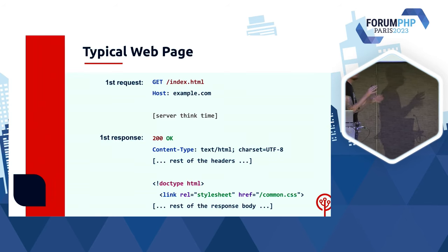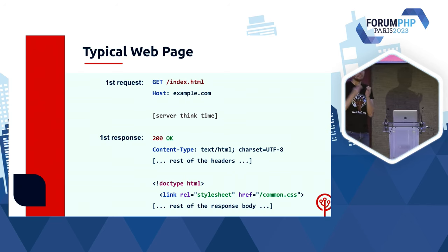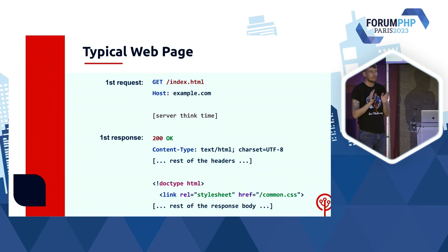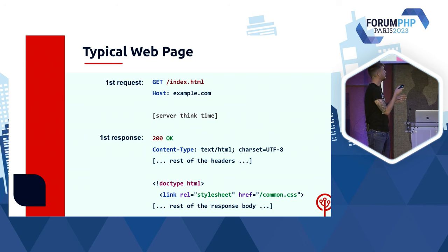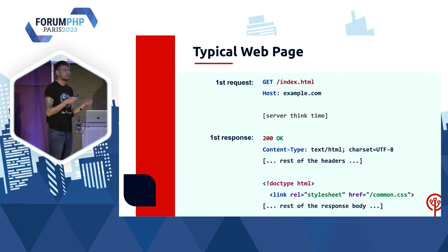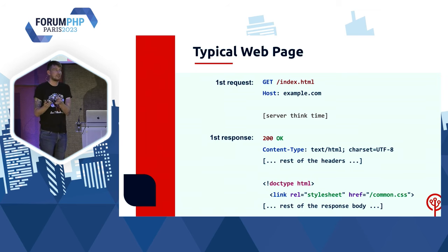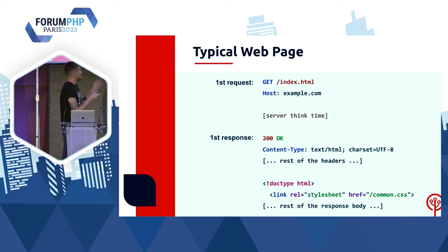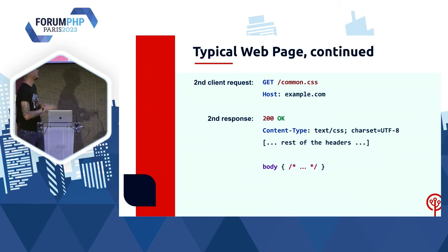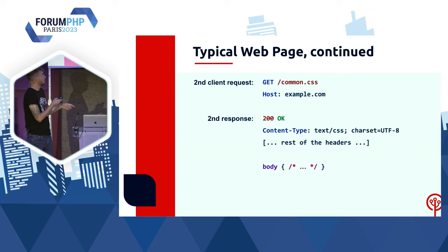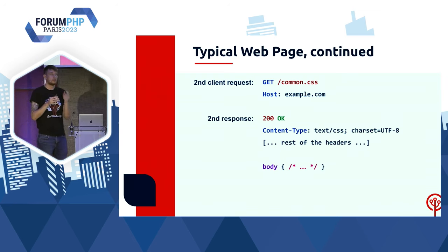Au niveau protocole, comment ça marche ? C'est du HTTP abstrait, c'est-à-dire que c'est ni du HTTP 1, ni du HTTP 2, ni du HTTP 3. C'est un truc qui marche à peu près dans les trois. Ça ressemble très fort à du HTTP 1. On demande la ressource principale. Notre serveur PHP exécute ses 2000 requêtes SQL — ça prend un moment, ce qu'on va appeler le temps de calcul, le temps de pensée du serveur. Ça bloque l'affichage de la page pendant ce temps-là. Ensuite, le HTML est généré, envoyé, récupéré par le navigateur. Le navigateur voit qu'il y a un fichier CSS qui est demandé, et une nouvelle requête est effectuée vers common.css.